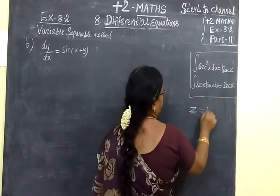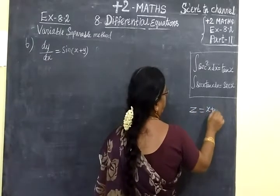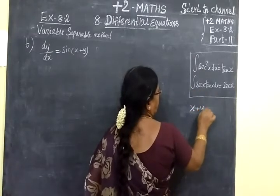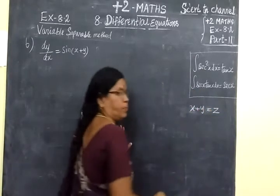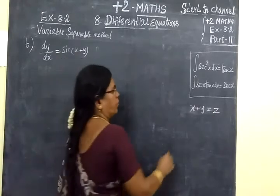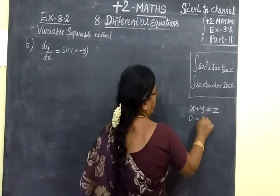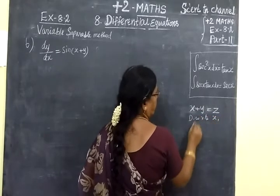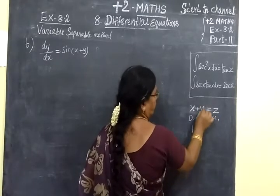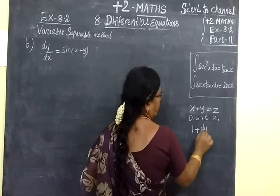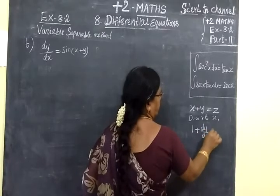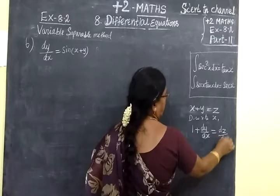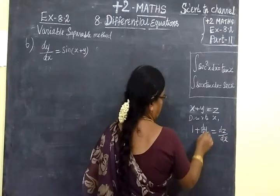Let z equal to x plus y, or x plus y equal to z. Now differentiate with respect to x. The differentiation of x is 1, and the differentiation of y is dy by dx, and the differentiation of z is dz by dx.